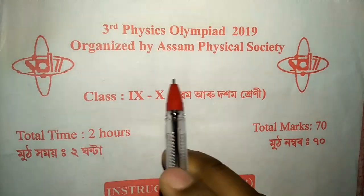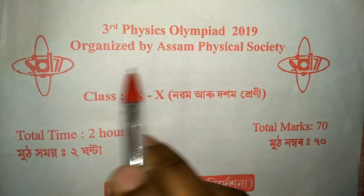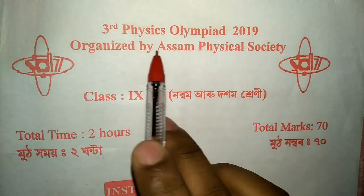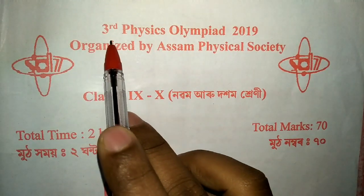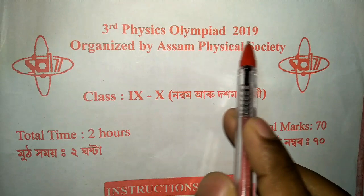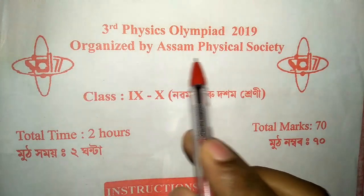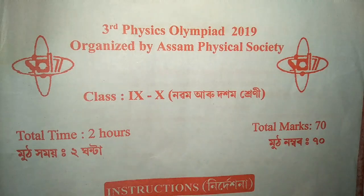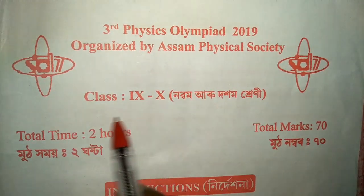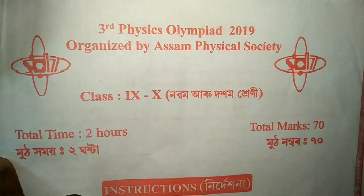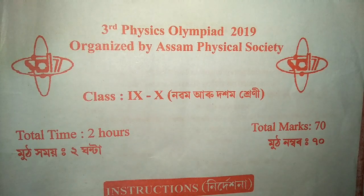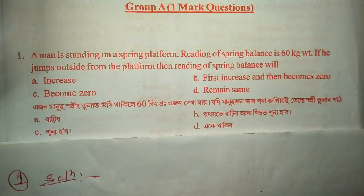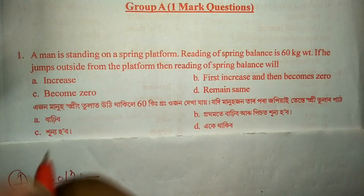Hi friends, welcome to my YouTube channel. Today we are going to solve the paper for the Third Physics Olympiad 2019, organized by the Awesome Physical Society. This question paper is based on class 9 and 10 physics. Let us solve question number one.